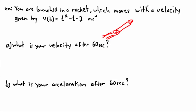You have your velocity as a function of time. At t = 0, you replace t with 0: 0² - 0 - 2, giving an initial velocity of -2 meters per second. That's a bit odd — it means your initial velocity is in the opposite direction to where you're flying.